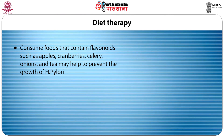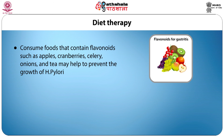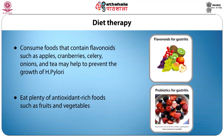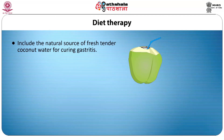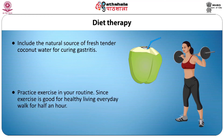Flavonoids inhibit inflammatory activity, so the growth of H. pylori can be prevented by flavonoids. Flavonoid-containing foods like apple, blueberries, celery, onion, and tea can be consumed. Peanuts, broad beans, spinach, strawberry, and soy — antioxidant foods — can also be included. Protein-rich foods like legumes, fish, nuts, and seeds are advocated. Eat plenty of antioxidant-rich foods such as fruits and vegetables. Foods like almonds, broccoli, dark green leafy vegetables, and raisins are rich in calcium and vitamins and can be eaten liberally. Include the natural source of fresh tender coconut water for curing gastritis. Practice exercise in your routine, since exercise is good for healthy living — walk for an hour every day.